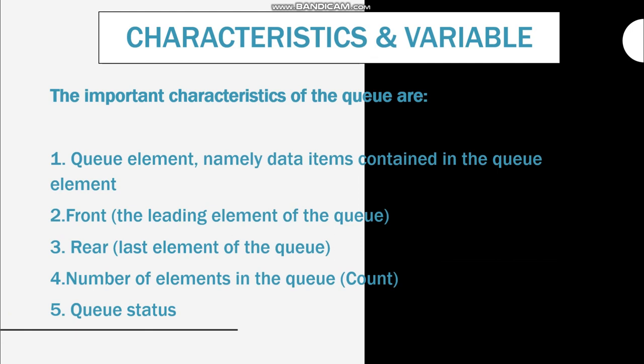Now I'll explain the characteristics of a queue. The most important characteristics are: first, the queue element — the data items contained in the queue; second, the front — the leading element of the queue; third, the rear — the last element of the queue; fourth, the number of elements in the queue or count; and fifth, the queue status.